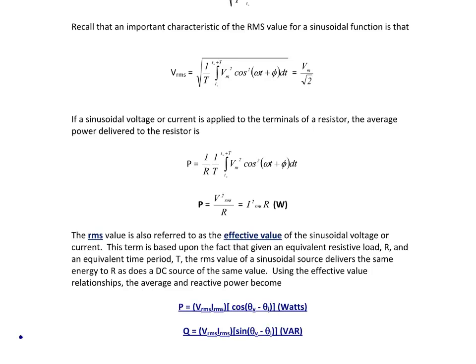What you should see here is that when you express your voltage or current as an RMS value, you have the same formulas that we use for the DC circuit for average power. So the RMS value is also referred to as the effective value of the sinusoidal voltage or current. This term is based upon the fact that given an equivalent resistive load and an equivalent time period T, the RMS value of a sinusoidal source delivers the same energy to R as does a DC source of the same value over one time period T.